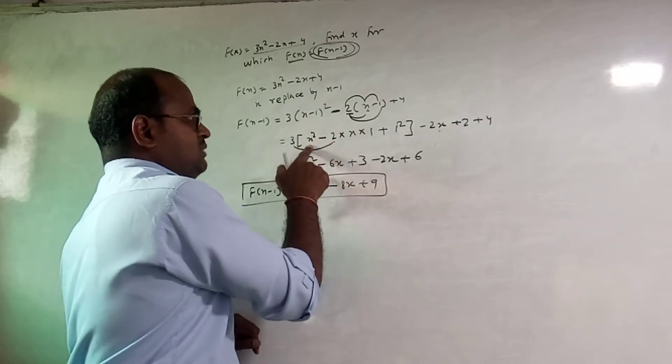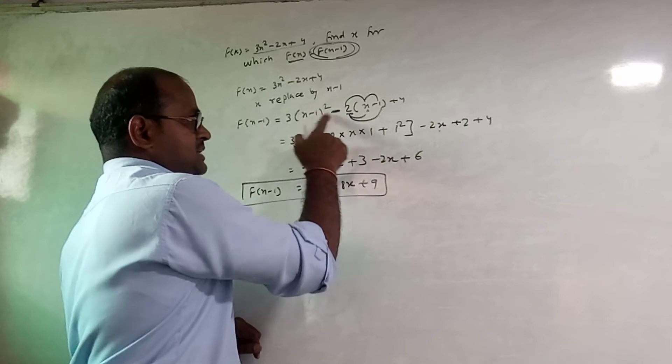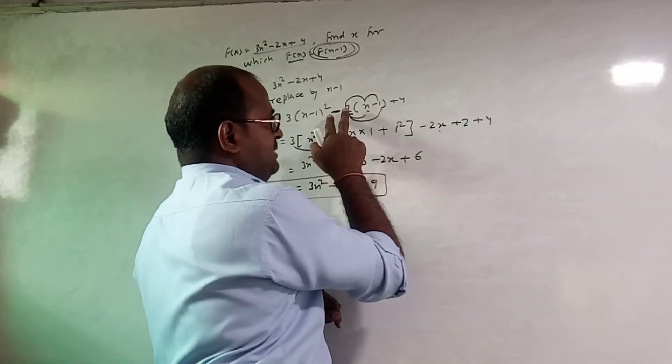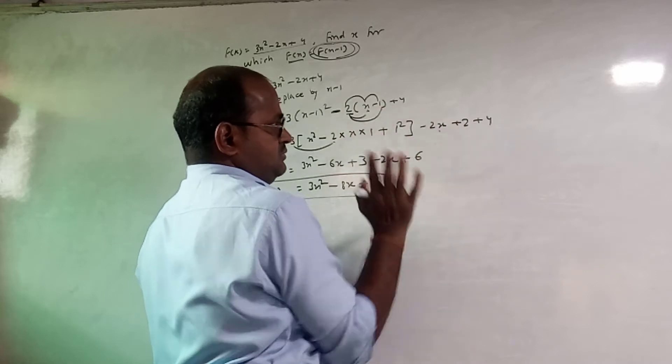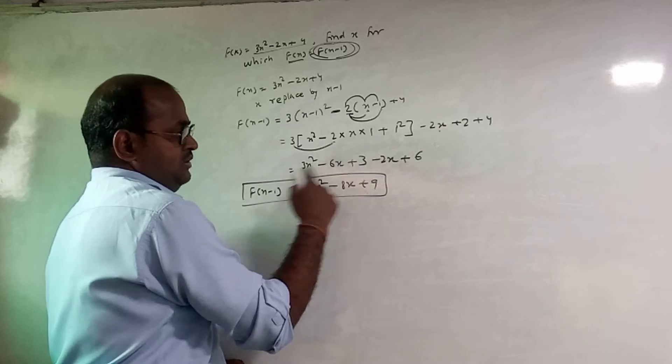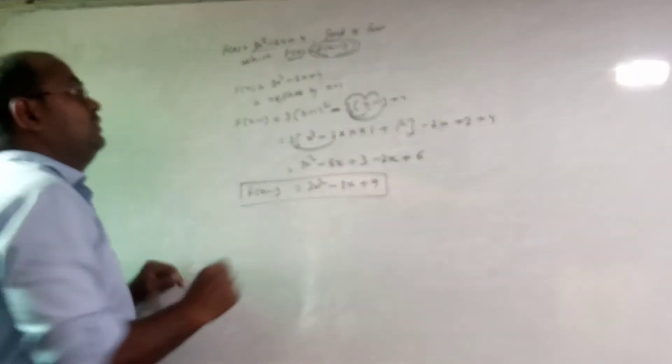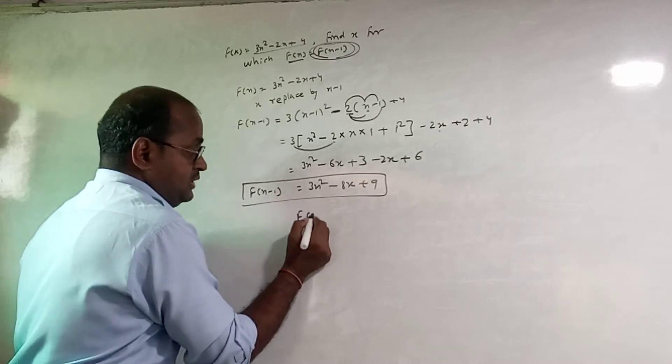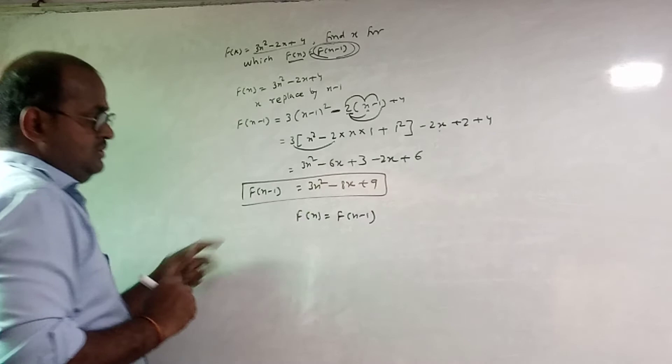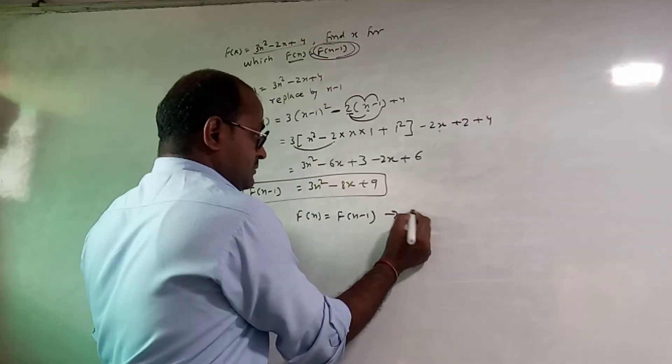a square minus 2 into first term into second term plus second square. Minus 2 into x, minus 2x, minus 2 into minus 1 plus 2. Multiply and add.